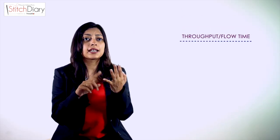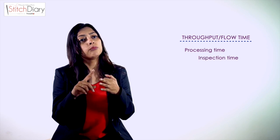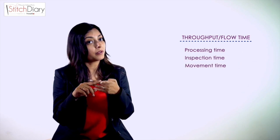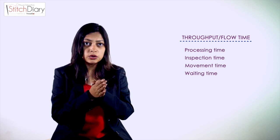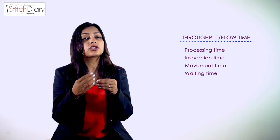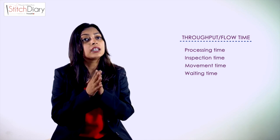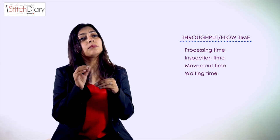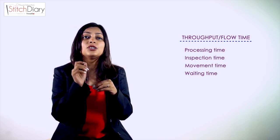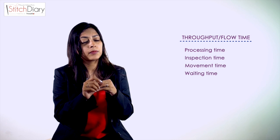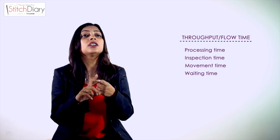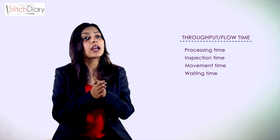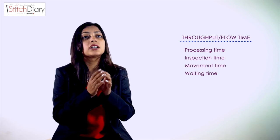Throughput time consists of processing time, inspection time, movement time, and queue or waiting time. The objective is to reduce throughput time so that production output can be increased. Generally, the major chunk of throughput time is not the actual processing time — time is spent in inspection, movement, or waiting. An analyst should try to reduce these three times to achieve a better production process.